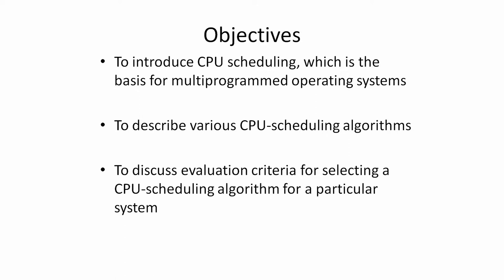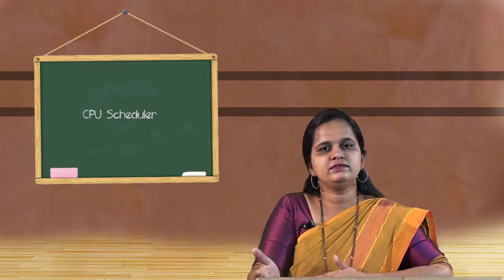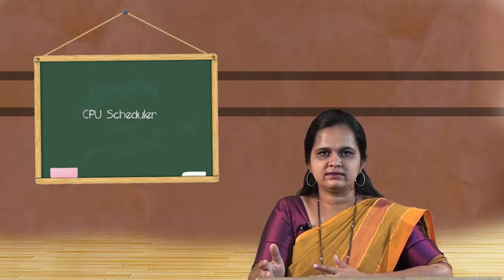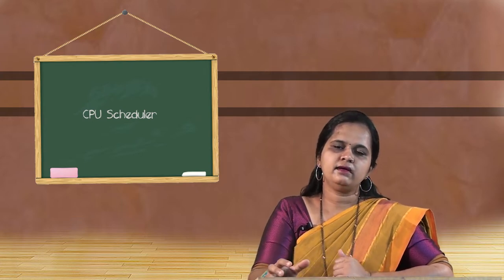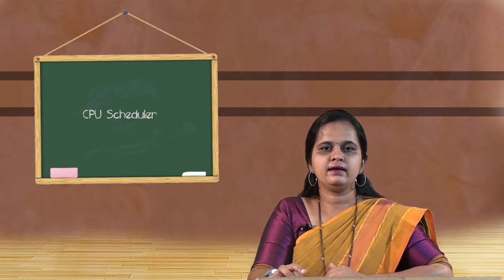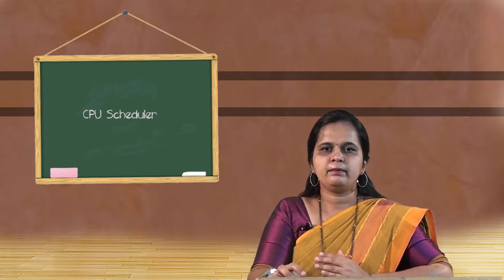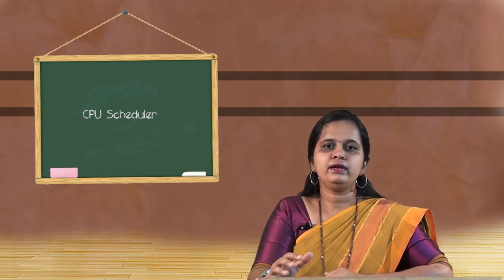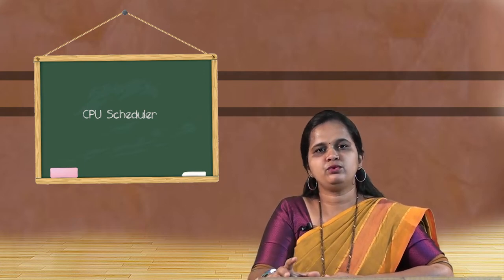The ready queue has all the processes which are waiting for the CPU. Once a process is in the CPU it is eligible to get executed, and like this one process, there are also plenty of processes waiting in the ready queue. The CPU Scheduler has to decide which process goes next, and we will also describe the different algorithms and the criteria used to compare between them.